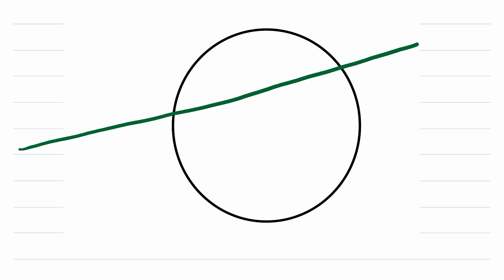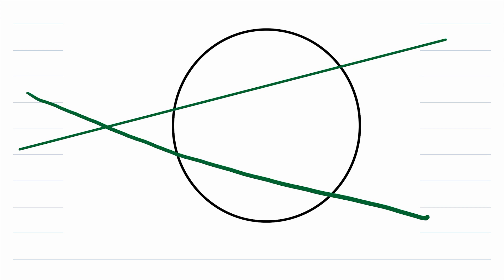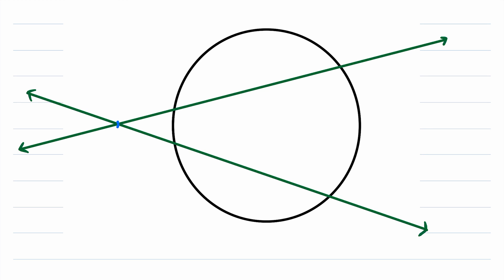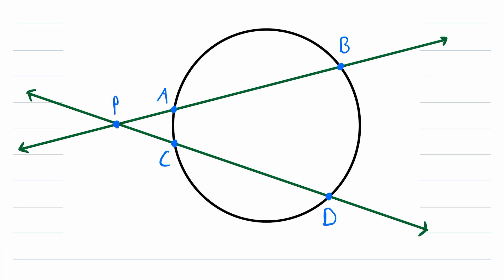We begin by stating the intersecting secants theorem. It's a theorem that tells us about the situation where we have two secants of a circle intersecting at a point outside the circle. Let me label all of these intersection points. We'll call this one P, this one A, this one B, this one C, and this one D. Then the intersecting secants theorem tells us that the length of segment PA multiplied by the length of segment PB is equal to the length of segment PC multiplied by the length of segment PD. So it says this whole part times this external part is equal to this whole part times this external part.